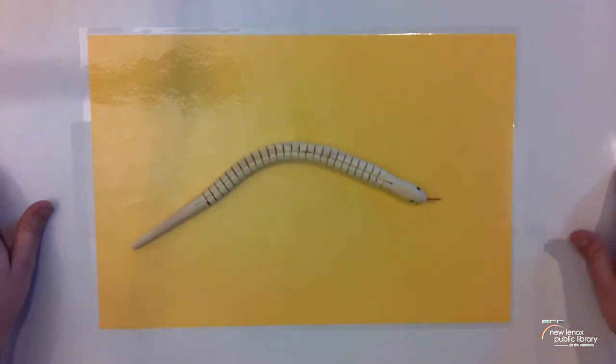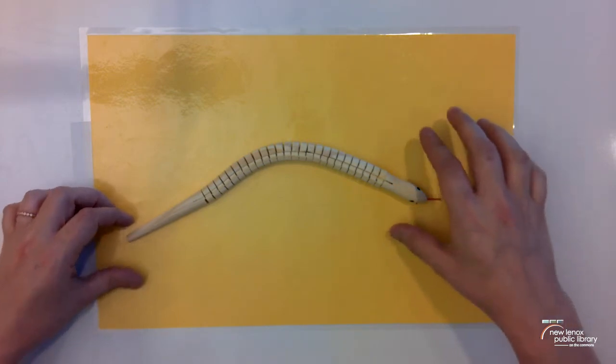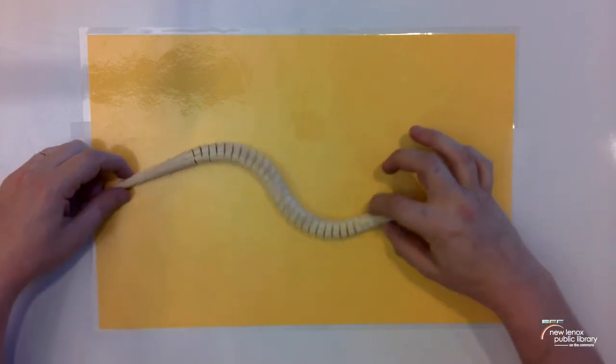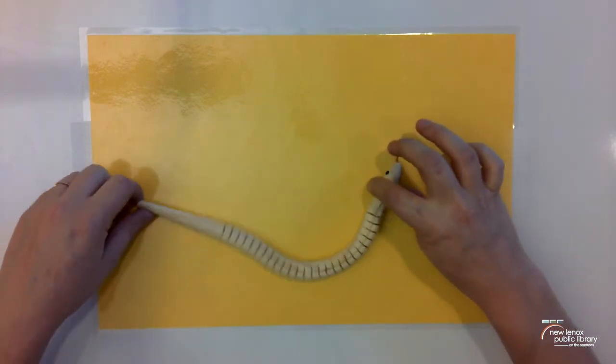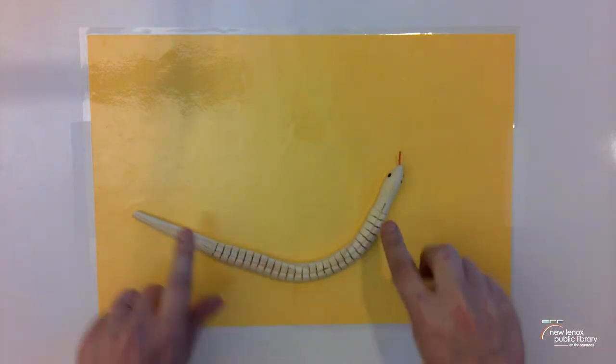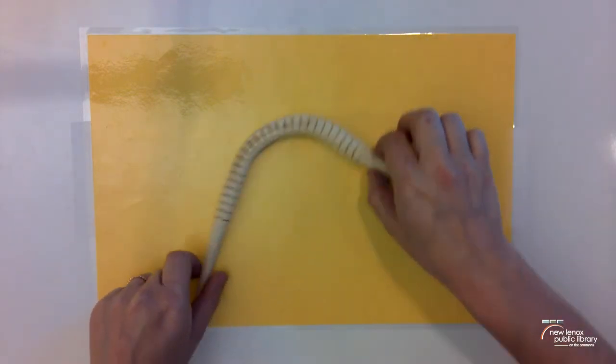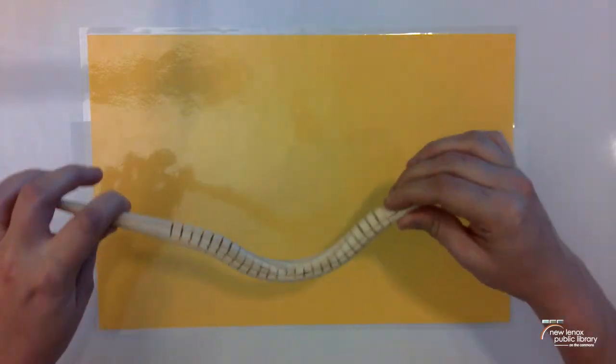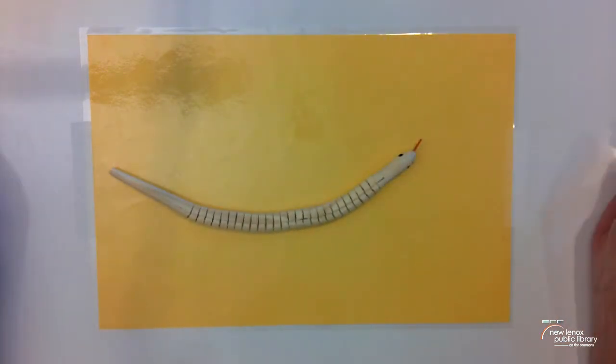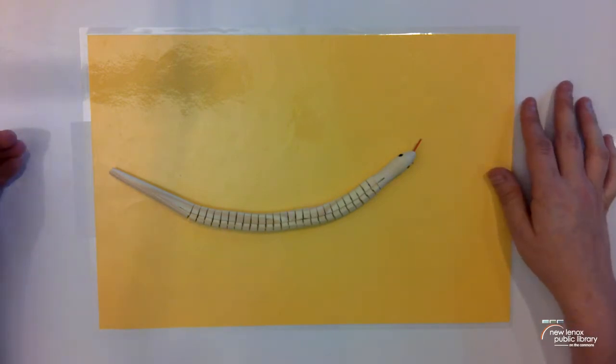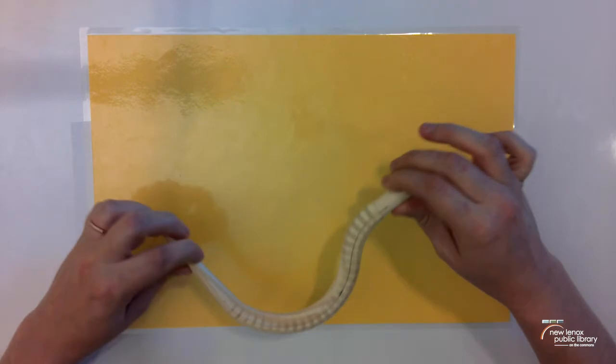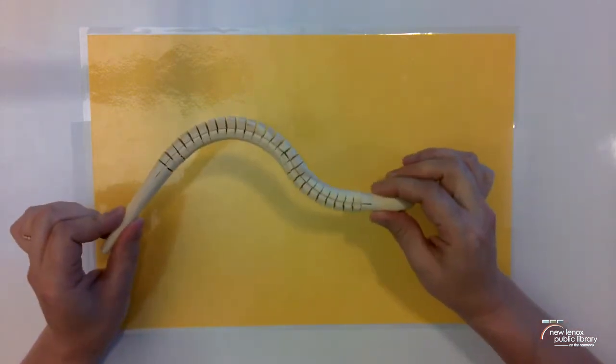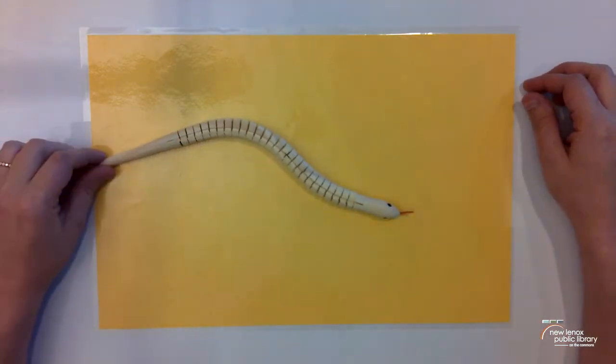Everyone thanks for joining me for Art Attack today. So today we are going to be painting a snake. It's a wooden snake and as you can see you can make it kind of move. So this is a very simple project. It should be pretty fun and I hope you enjoy. So we're going to go ahead and get started right now.